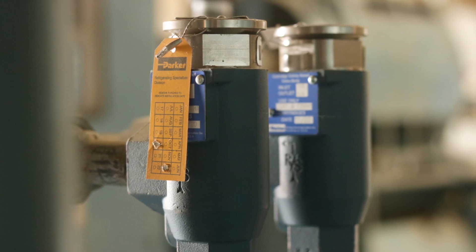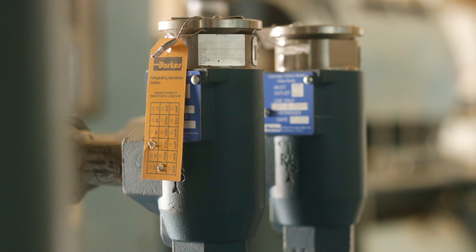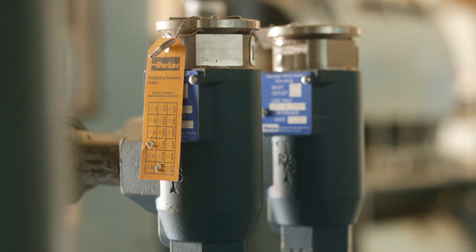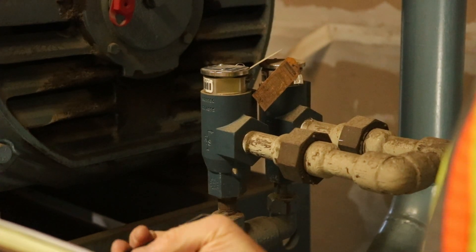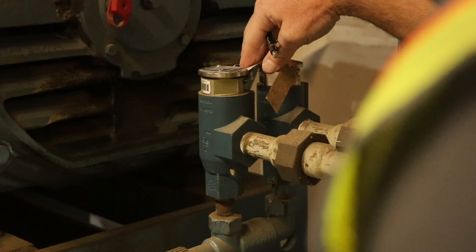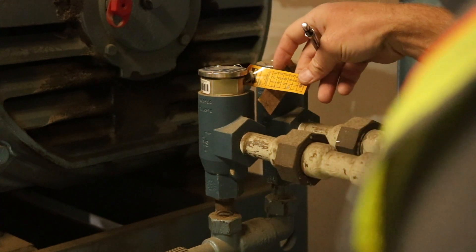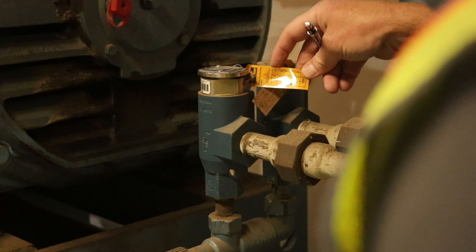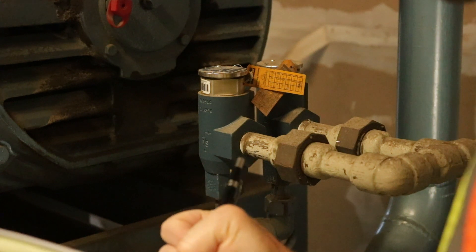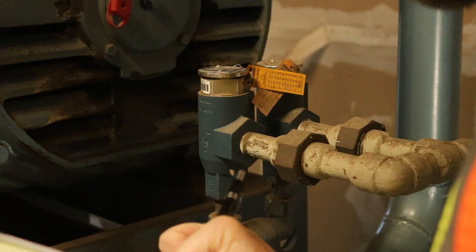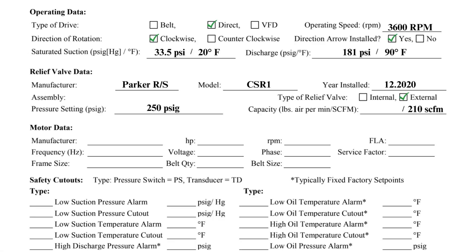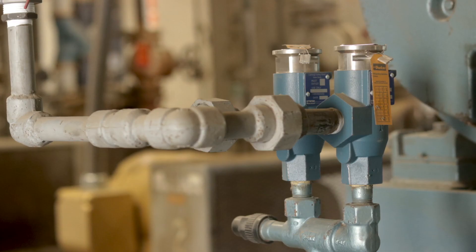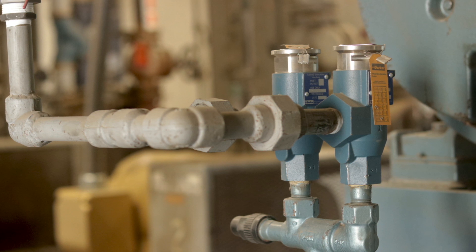Note: if your facility reprints the same completed first page for each checklist, the relief valve data is one data point on the first page that can change. Be sure to check if the relief valve installed matches what is listed on the form. The relief valves on this compressor are external to the equipment and terminate to atmosphere, so this configuration is categorized as external.